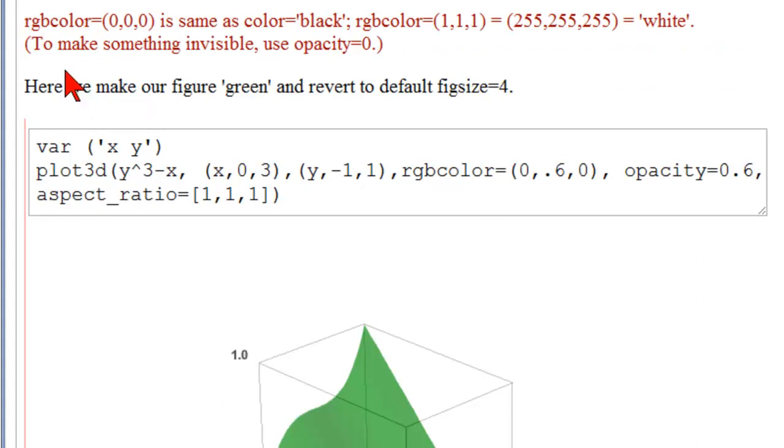If you want to make your colors precise, you can use the command RGB color instead of color. And so RGB color equal to, parenthesis zero, zero, zero, is the same as color equal to black. RGB color equal to one, one, one is the real RGB of 255, 255, 255, or white. It won't be white. If you want to make it invisible, you must use opacity equal to zero.